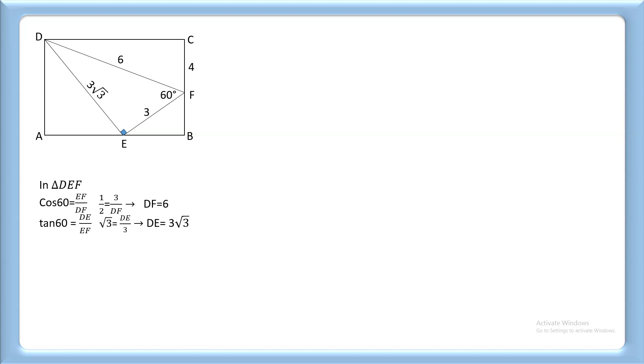Now in triangle CDF, angle C equals 90 degrees because it's a rectangle. Therefore, using the Pythagorean theorem, CD² + CF² = DF². So CD² + 4² = 6², and we get CD equals 4.472.